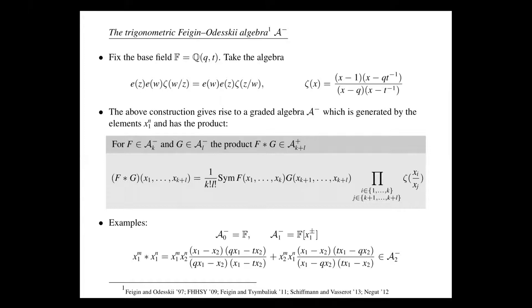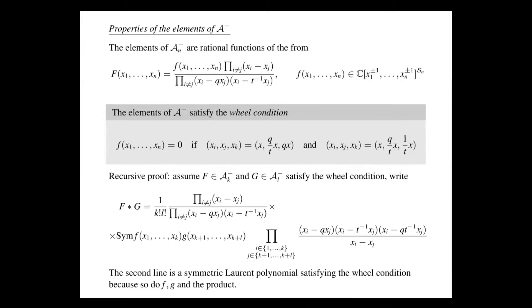Let me talk about the properties of the elements of this vector space. Already one can see that because of the poles, elements must have simple poles at shifted diagonals X1/X2 shifted by Q and T, and also they should have Vandermonde-type terms. The general element of this algebra will have simple poles at every possible combination Xi/Xj shifted by Q and T-inverse, and a Vandermonde squared factor. The leftover — the most interesting part — is a symmetric Laurent polynomial.